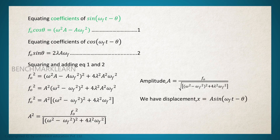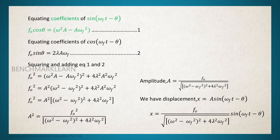Since the displacement x equals a sin(omega_f t minus theta), the displacement can be rewritten as: x equals f₀ divided by the square root of [(omega² minus omega_f²)² plus 4 lambda² omega_f²], multiplied by sin(omega_f t minus theta).